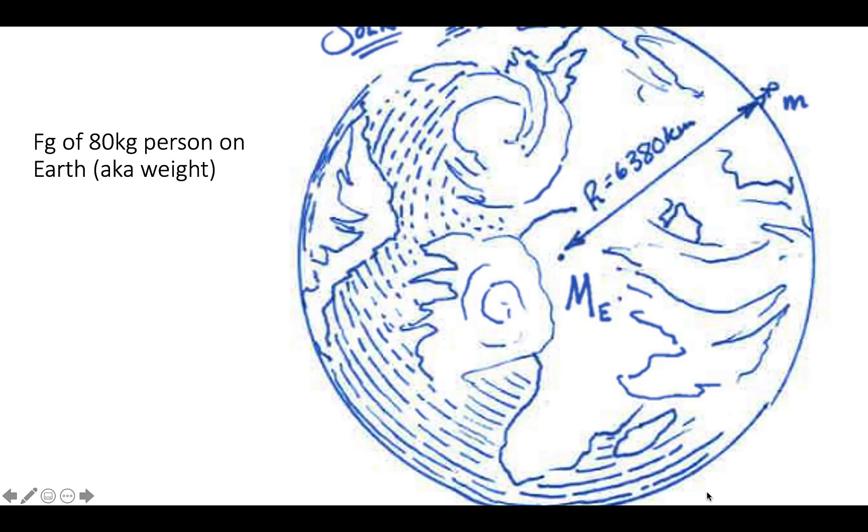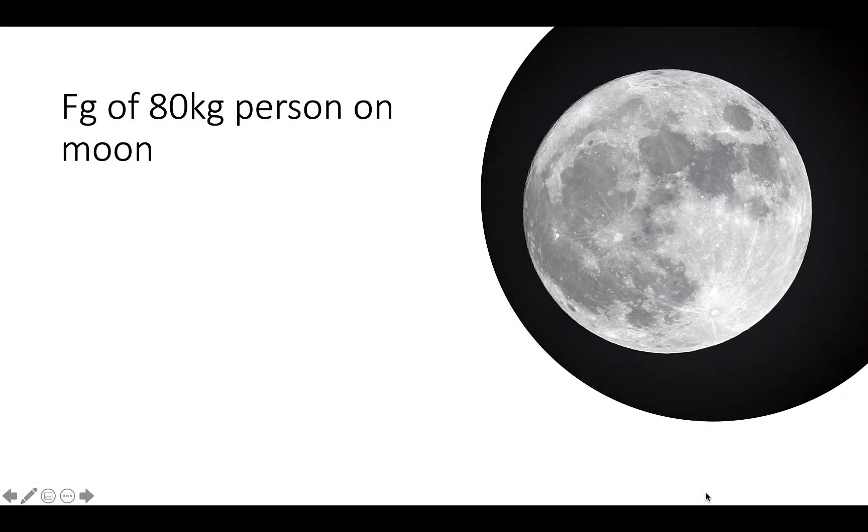If we go back to our original example of force gravity of an 80 kilogram person on Earth, also known as the weight on Earth, Fg Earth equals mg Earth. Fg Earth equals 80 kilograms times 9.8 newtons per kilogram. Force gravity of an 80 kilogram person near the surface of Earth is 784 newtons.